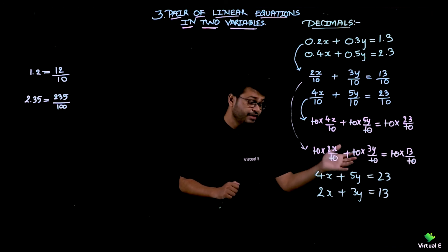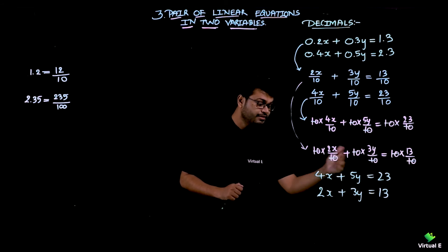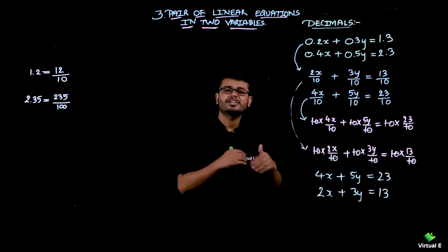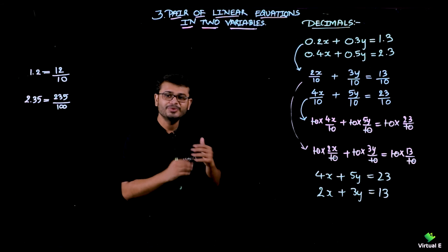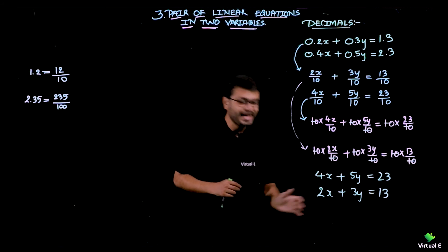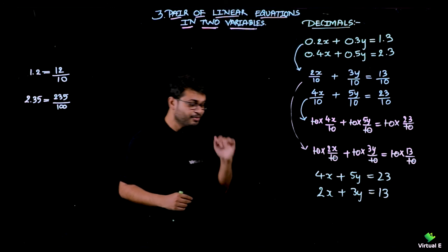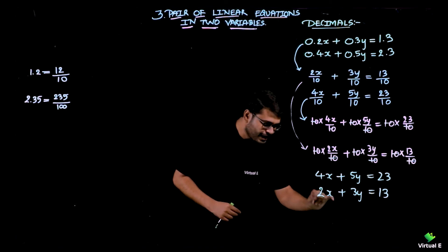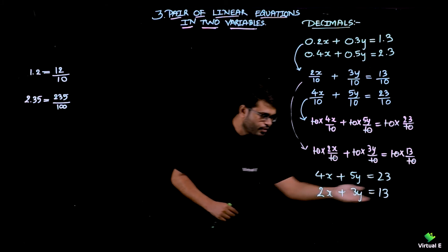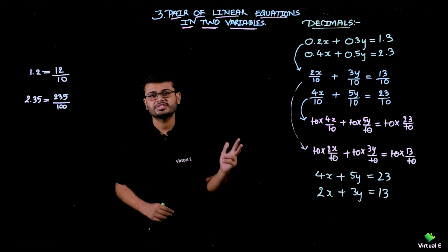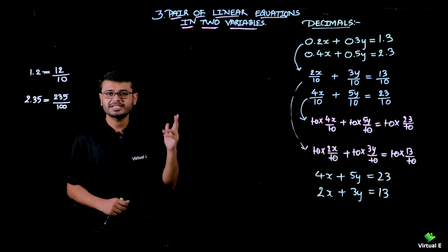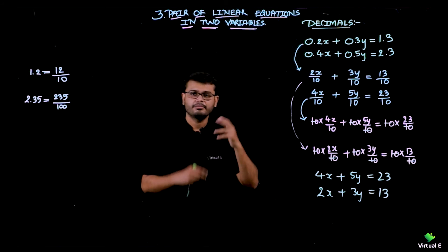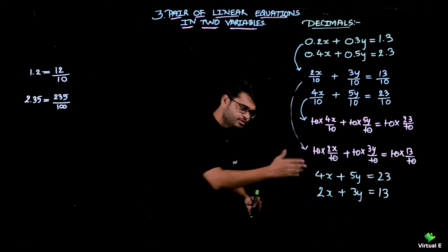To eliminate y, I would need to multiply by 3 and 5, but we can reduce the number of steps. It is easier to eliminate x. The reason is 4x is in the first equation and 2x in the second. If I multiply the second equation by 2, it becomes 4x — coefficients become equal. Then I check whether they have the same sign or different signs, and based on that do addition or subtraction.